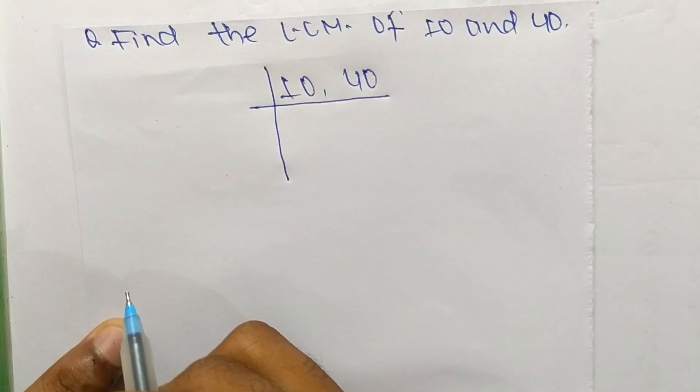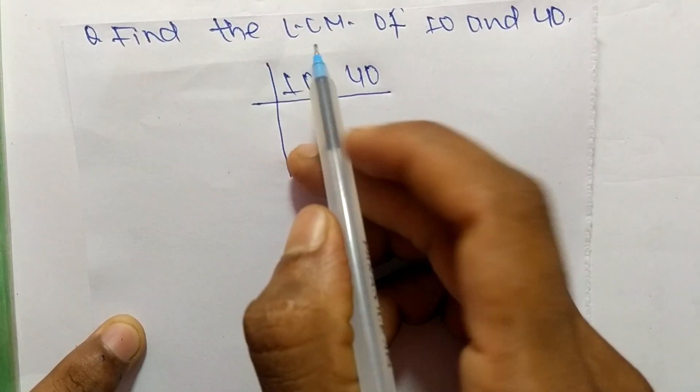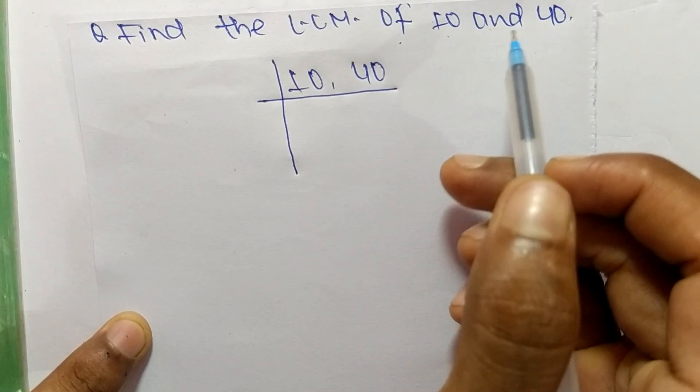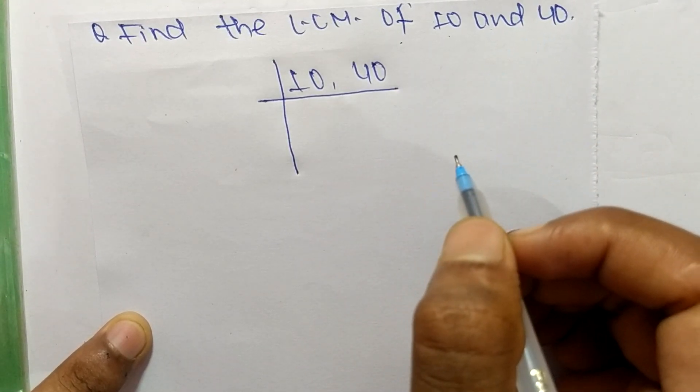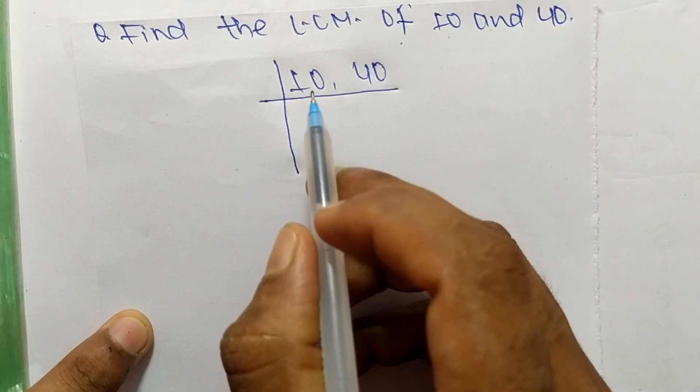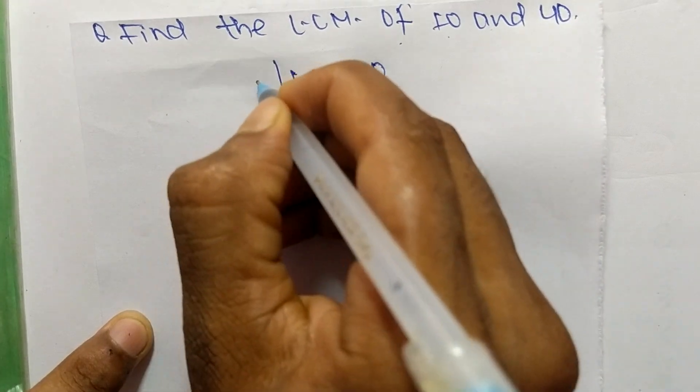Today in this video we shall learn to find the LCM of 10 and 40. To find the LCM, first we have to choose the lowest number which can exactly divide 10 and 40. The number is